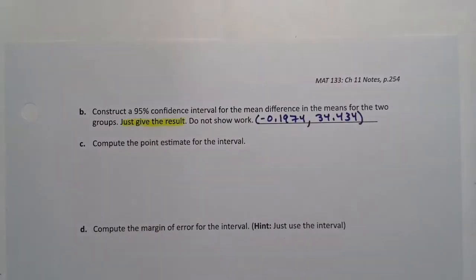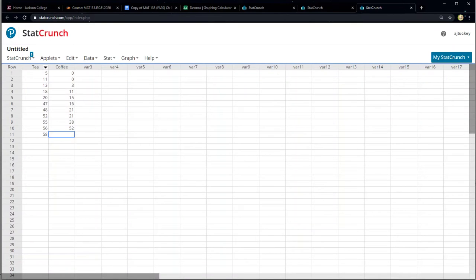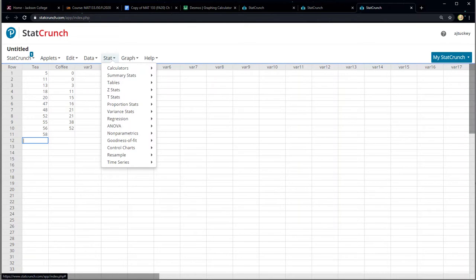So let's go check it in StatCrunch and make sure StatCrunch gets the same answer and also learn how to do it in StatCrunch. So you can see I have the tea here, I have the coffee right next to it. Two different columns. It's totally okay that they're not the same amount because they're not dependent. I'm not going to find the differences here. These are two separate groups.